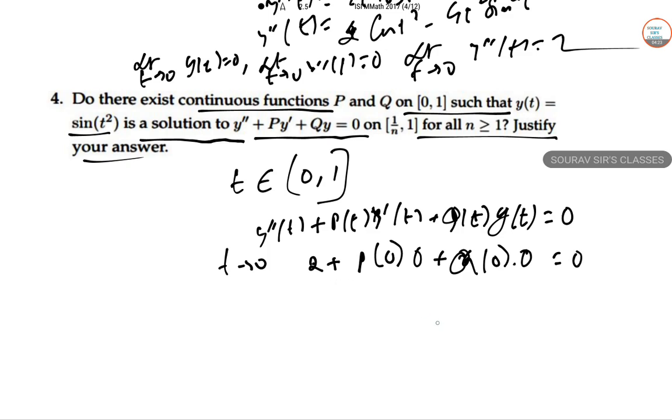This gives 2 = 0, which is impossible. Therefore, no such functions P and Q exist. Thank you.